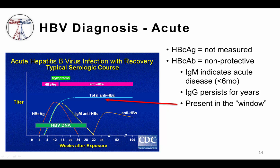Overall, the diagnosis of acute hepatitis B infection is made when the hepatitis B surface antigen and the hepatitis B core IgM are both found to be positive.